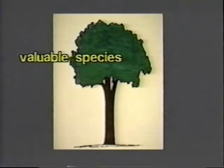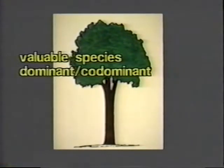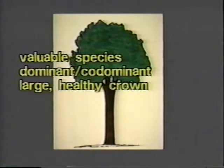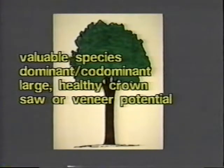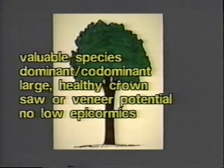For timber crop trees, favor the most valuable species currently in a dominant or co-dominant crown position. Select trees with large, healthy crowns relative to DBH. Crop trees should have the potential to produce at least two eight-foot bolts of either saw or veneer logs and have no epicormic branches on the lower 17 feet of the bole.